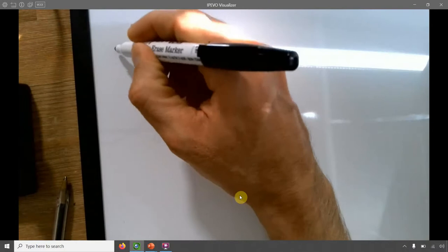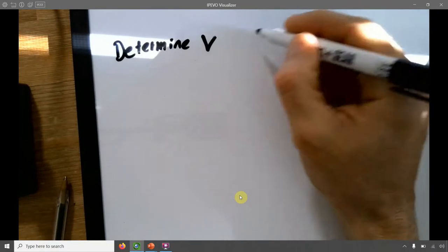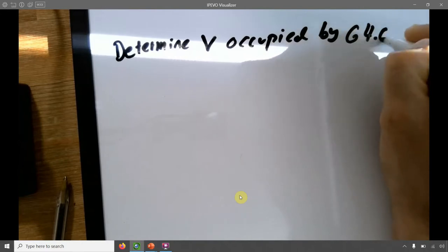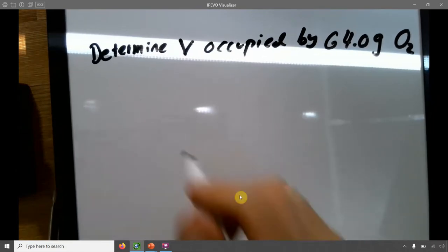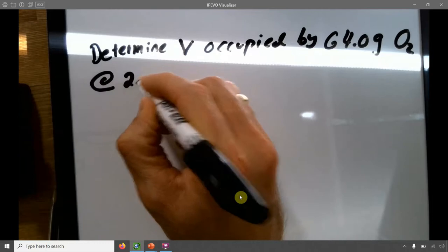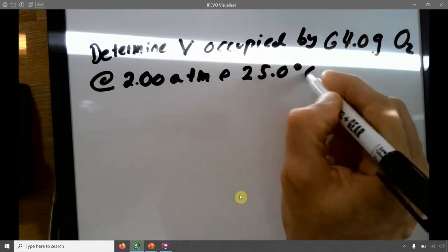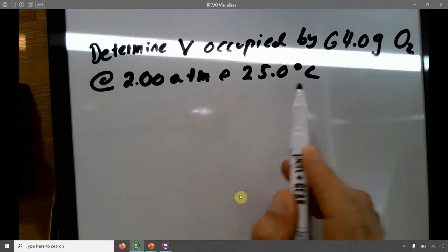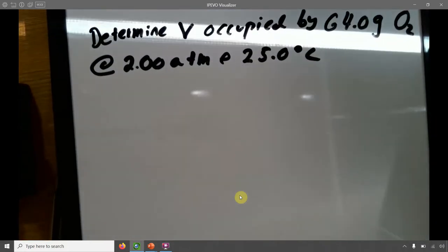And let's determine the volume occupied by 64.0 grams of oxygen at 2 atm and 25 degrees Celsius. Okay, so I gave you a pressure, I gave you a temperature, I gave you a mass, which is related to moles, and I want to know volume. So to me, it's red flagged that this thing here is PV equals nRT, when I'm giving you most of the things that are related to that. So PV equals nRT.